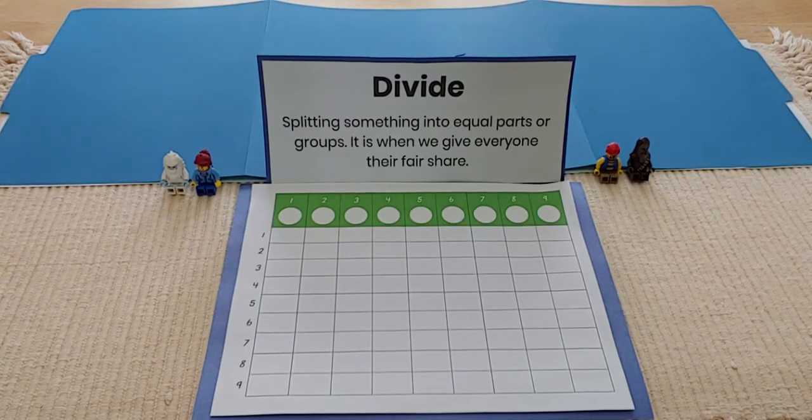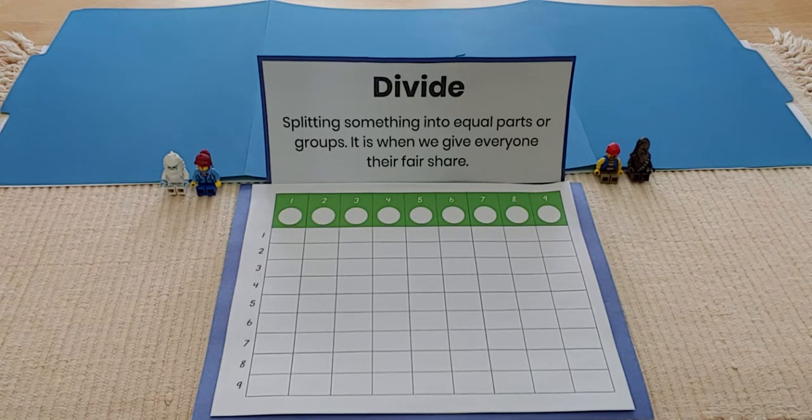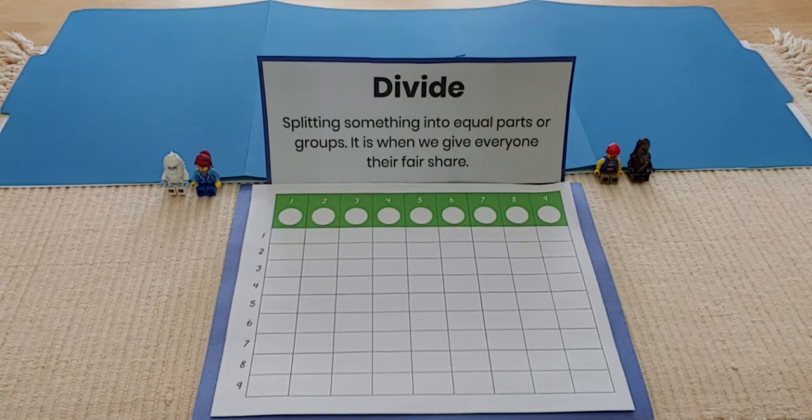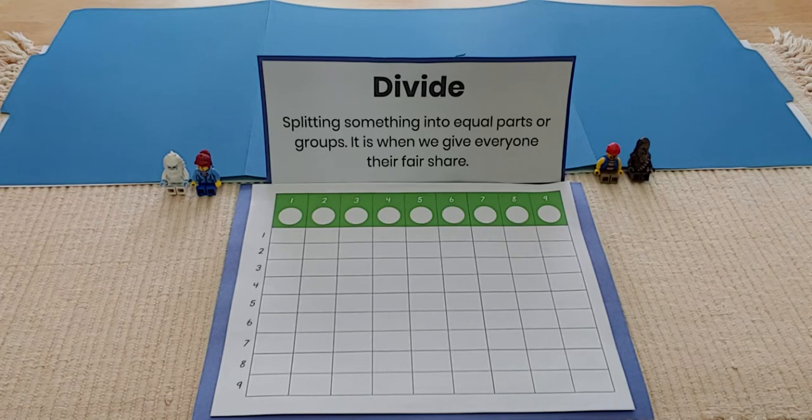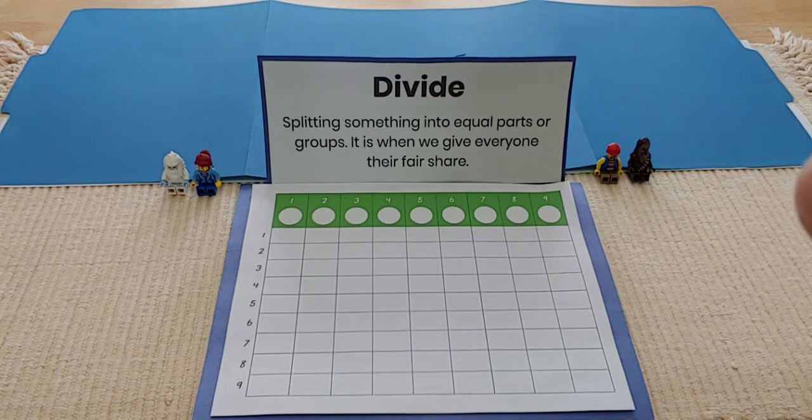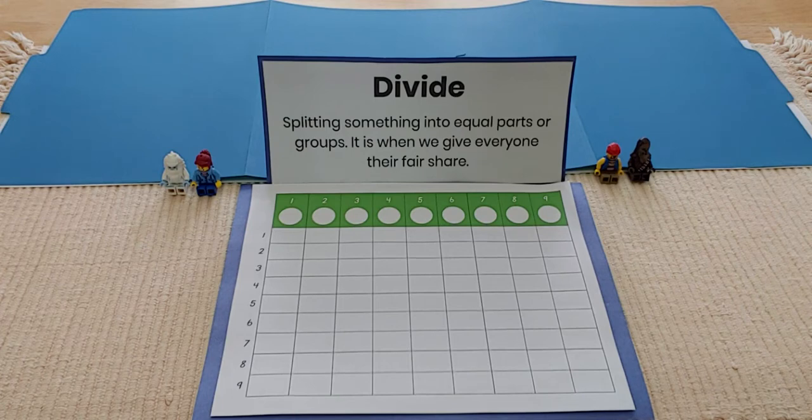Hey friends, today's math lesson is going to be on division. Division is when you split something up into equal parts or groups. It's when you give everybody their fair share. We don't want anyone to feel like they've gotten more or less than their friends. Division is when we make sure everyone gets the same amount.